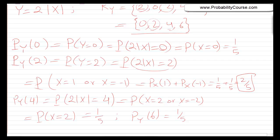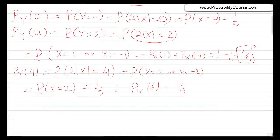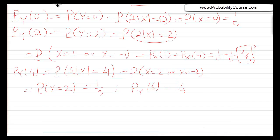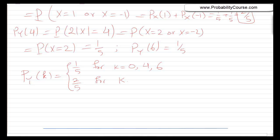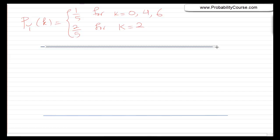So we have found the probability mass function of Y. To summarize: py of k equals 1 over 5 for k equals 0, 4, and 6, and py of k equals 2 over 5 for k equals 2. That is: the probability that Y equals 2 is 2 over 5, the probability that Y equals 0 is 1 over 5, the probability that Y equals 4 is 1 over 5, and the probability that Y equals 6 is 1 over 5.